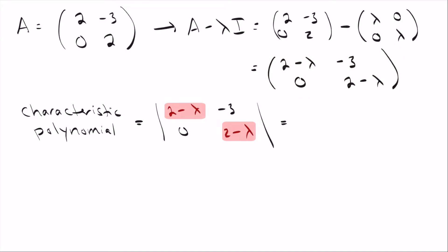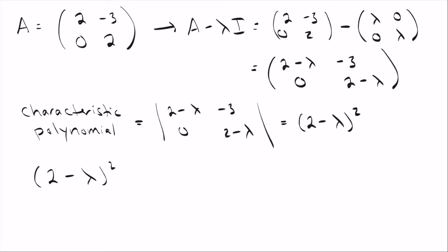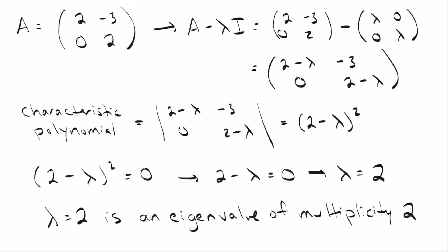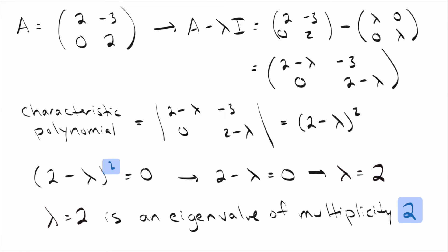The characteristic polynomial is the determinant of that matrix. The two (2 minus lambda) terms multiply together, minus 0, giving (2 minus lambda) squared equals 0. Taking the square root of both sides gives lambda equals 2. We say lambda equals 2 is an eigenvalue of multiplicity 2 — the multiplicity comes from the squared factor. A cube would give multiplicity 3, a fourth power multiplicity 4, and so on.